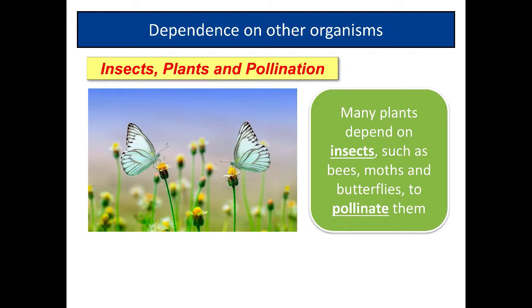As well as depending on plants, plants also depend on insects and birds. Insects like bees, moths, and butterflies—plants depend upon them to pollinate. Many plants depend on these insects for pollination.